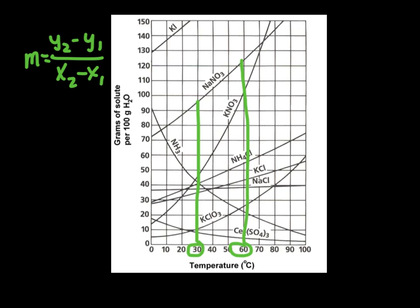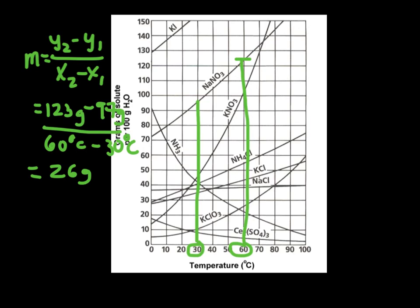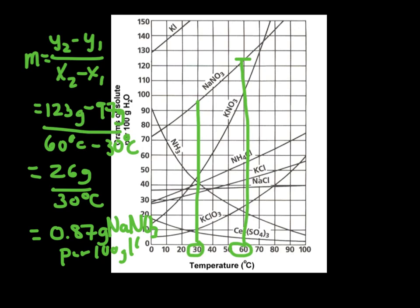So we need to do some estimating. Our y2 looks like it's about, say, 123 grams, right? Right there. So 123 grams. Our y1 looks like it's roughly 97, so minus 97 grams divided by 60 degrees Celsius minus 30 degrees Celsius. When we do this, we get 26 grams divided by 30 degrees Celsius. And unlike your math class, we actually need the decimal, if you recall, from the fall. So when we do the division, we get 0.87 grams of sodium nitrate per 100 grams of water per degree C.